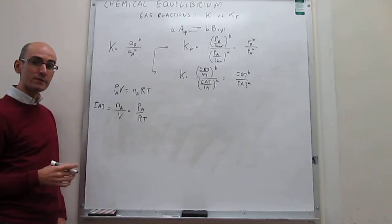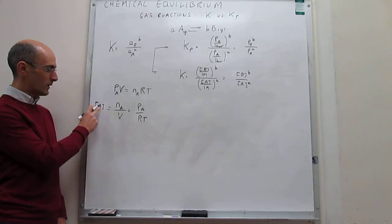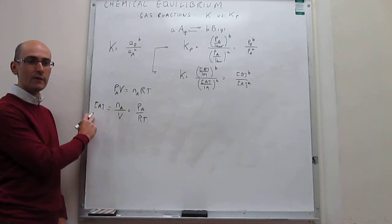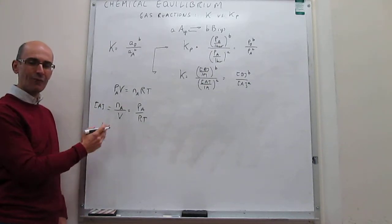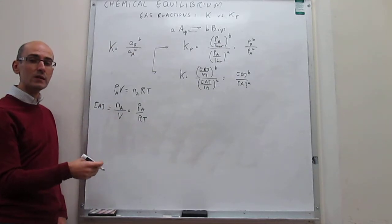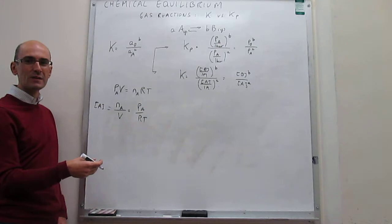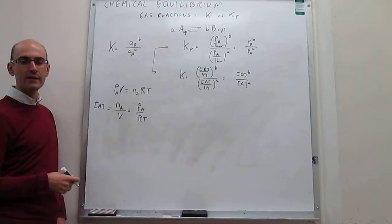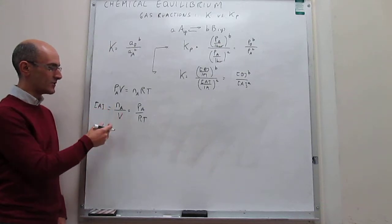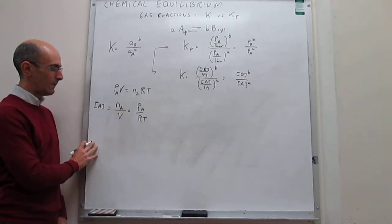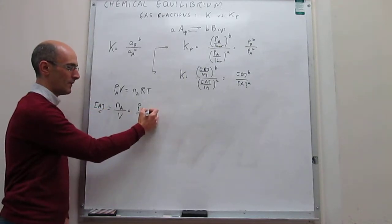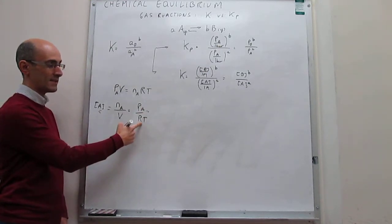There is a distinction between molar concentration of a solute and a gas. For a solute, moles per liter means moles of solute over volume of solution. For a gas, there is no solution — it is the volume of the container. But aside from that unimportant difference, the units are the same and this is truly a molar concentration. So there is a direct proportionality between the partial pressure of the gas and its molar concentration, which simply depends on RT.